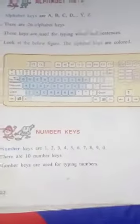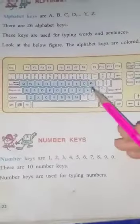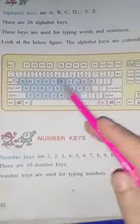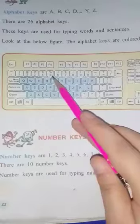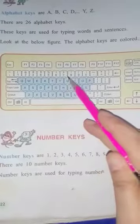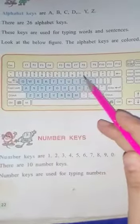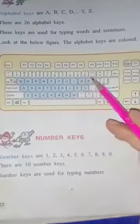Number keys — which keys are? 1, 2, 3, 4, 5, 6, 7, 8, 9, 0.